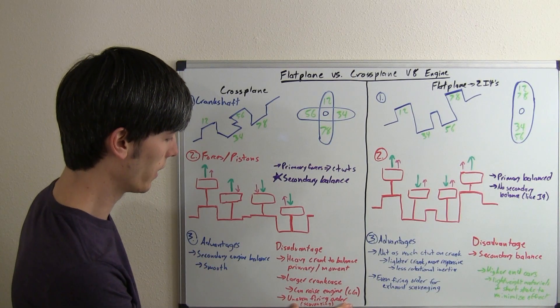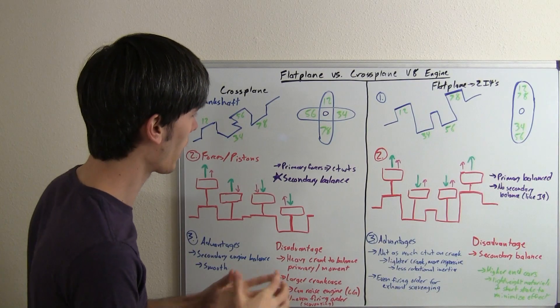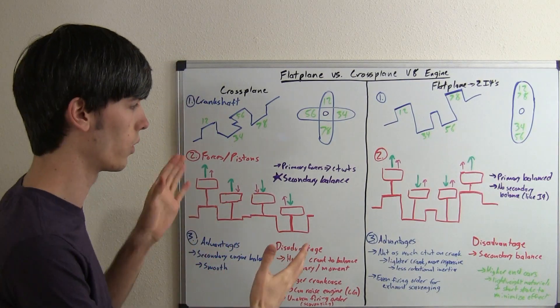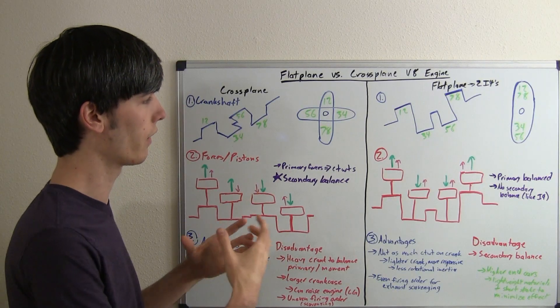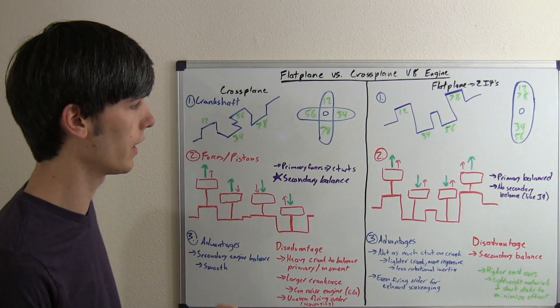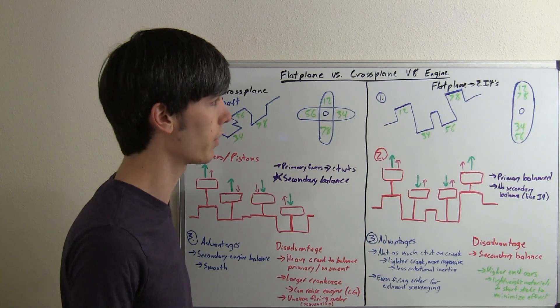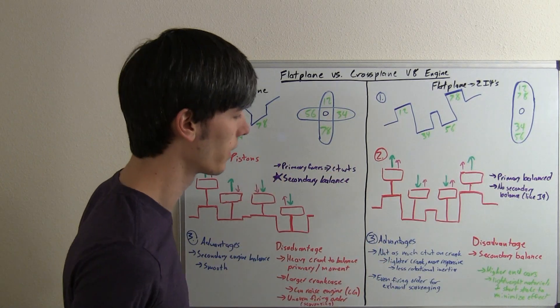Also, one thing is the uneven firing order for scavenging, the exhaust scavenging. So I'm going to explain this in more detail in a future video, but basically the pulses of the exhaust aren't exactly even, whereas they are on the flat-plane. They alter between each cylinder bank.